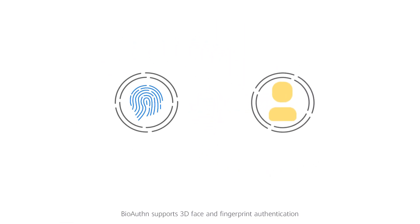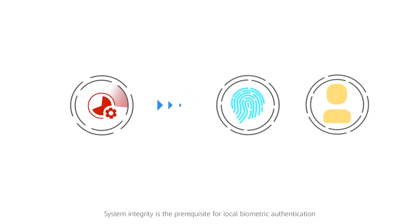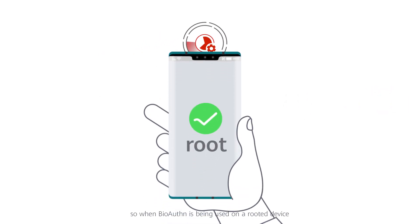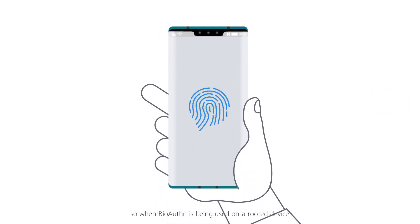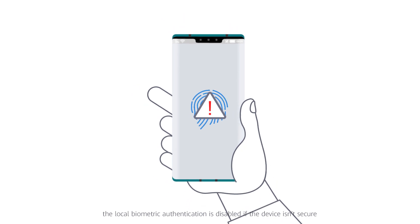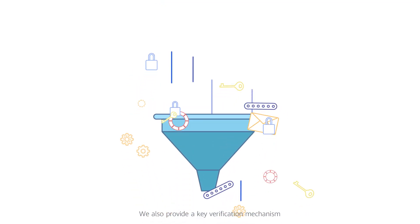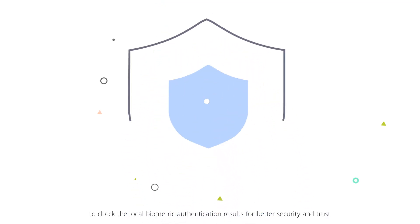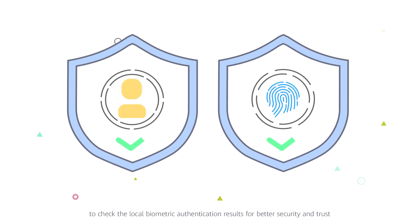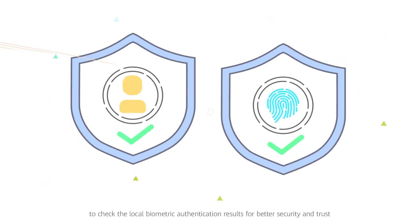BioAuthn supports 3D face and fingerprint authentication. System integrity is the prerequisite for local biometric authentication, so when BioAuthn is being used on a rooted device, the local biometric authentication is disabled if the device isn't secure. We also provide a key verification mechanism to check the local biometric authentication results for better security and trust.